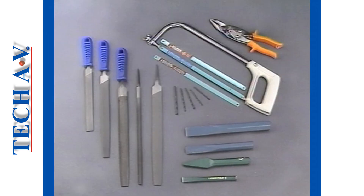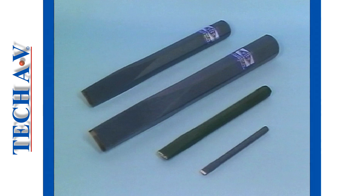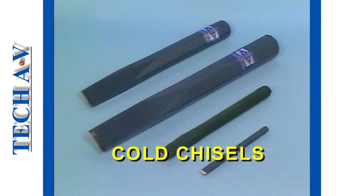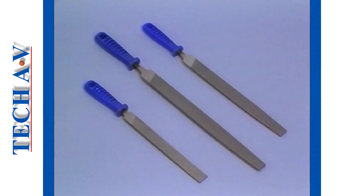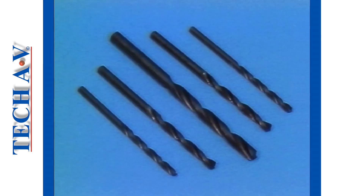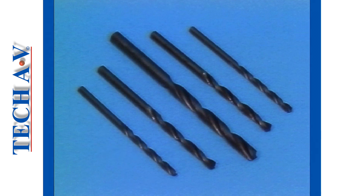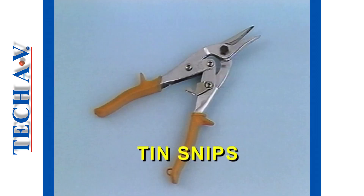Tools under the cutting group include hack saws, cold chisels, metal files, twist drill bits, and tin snips.